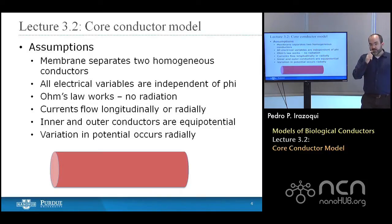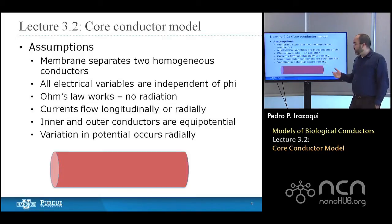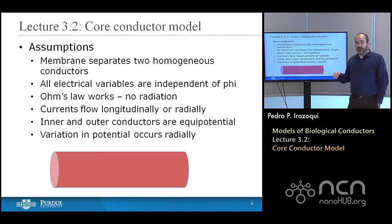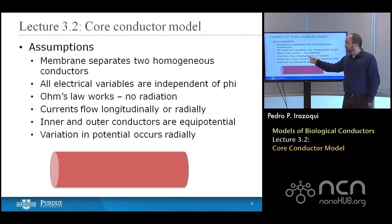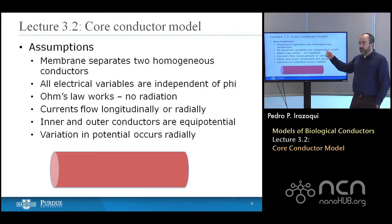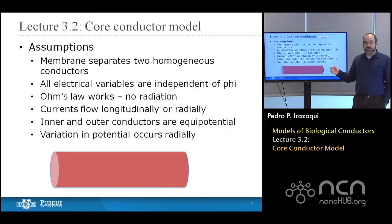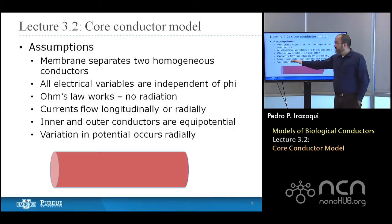All electrical variables are going to be independent of phi. In our cylindrical coordinate system, we have three axes: Z hat, which flows along the axis of the axon; R hat, which is radially outward from the axon; and phi, the angular direction flowing around the axon. When we say the electrical variables are independent of phi, we mean that as you move around a constant radius, you won't see variation in current and voltage — the current is homogeneous in the phi hat direction.